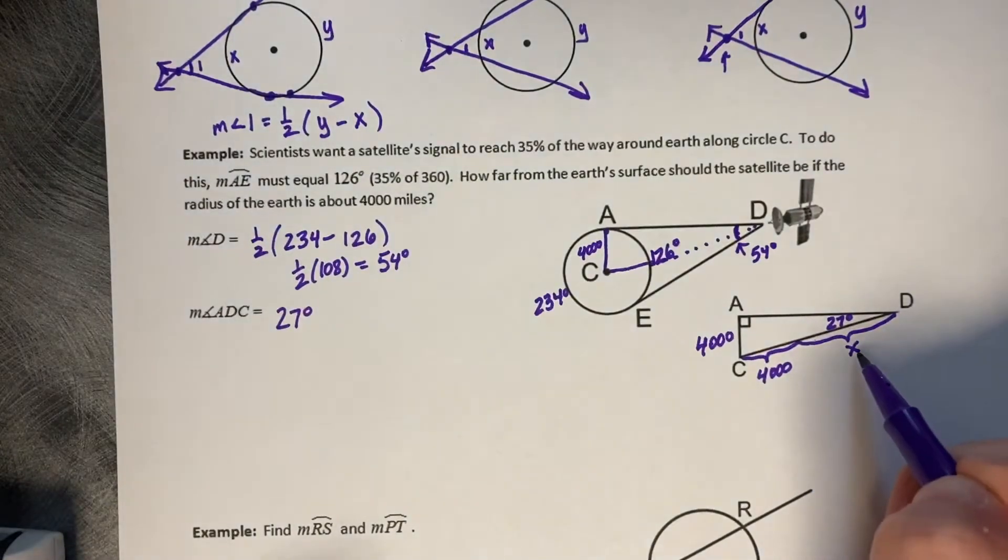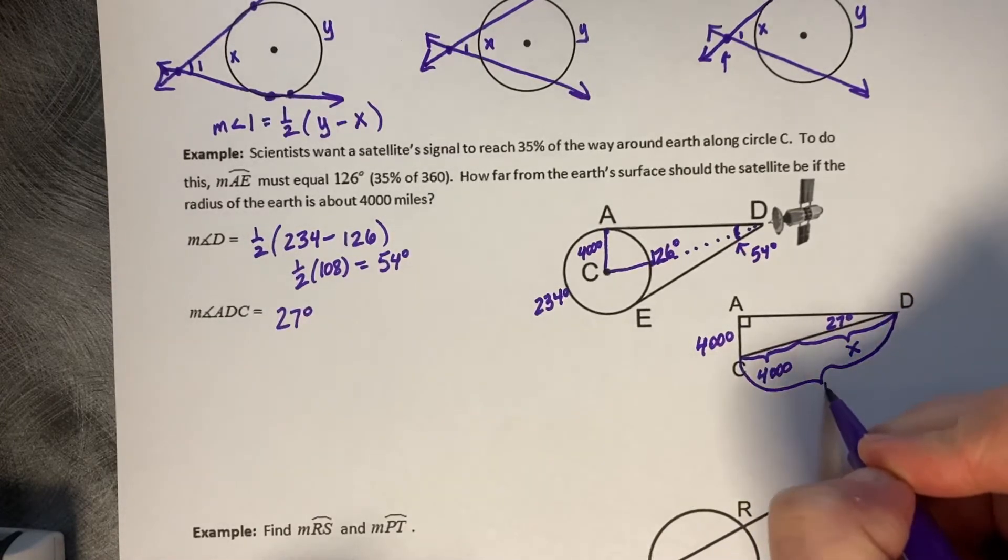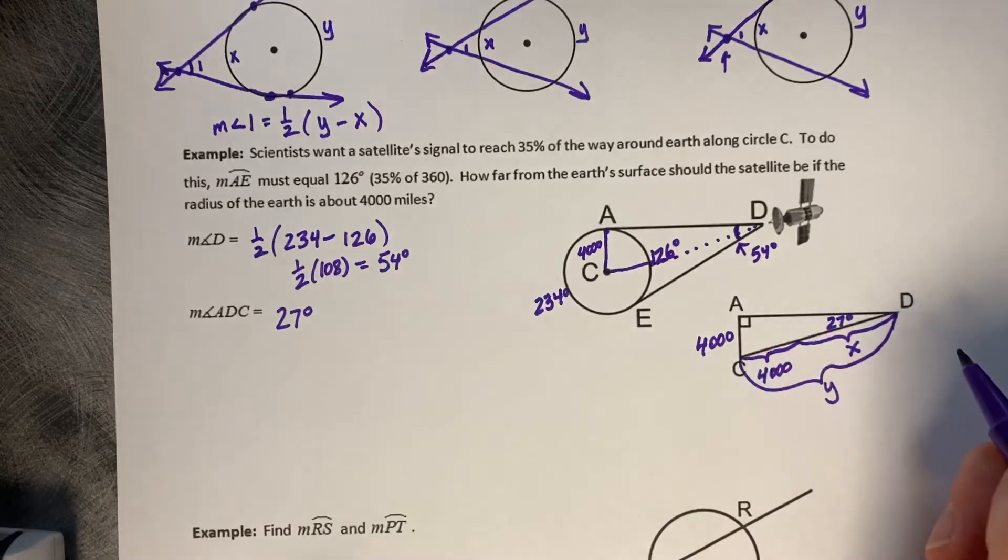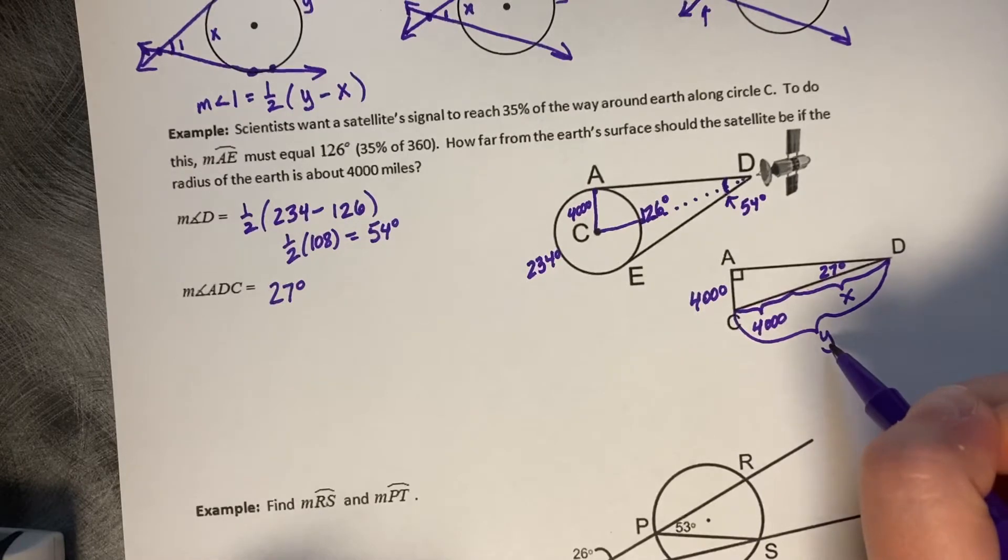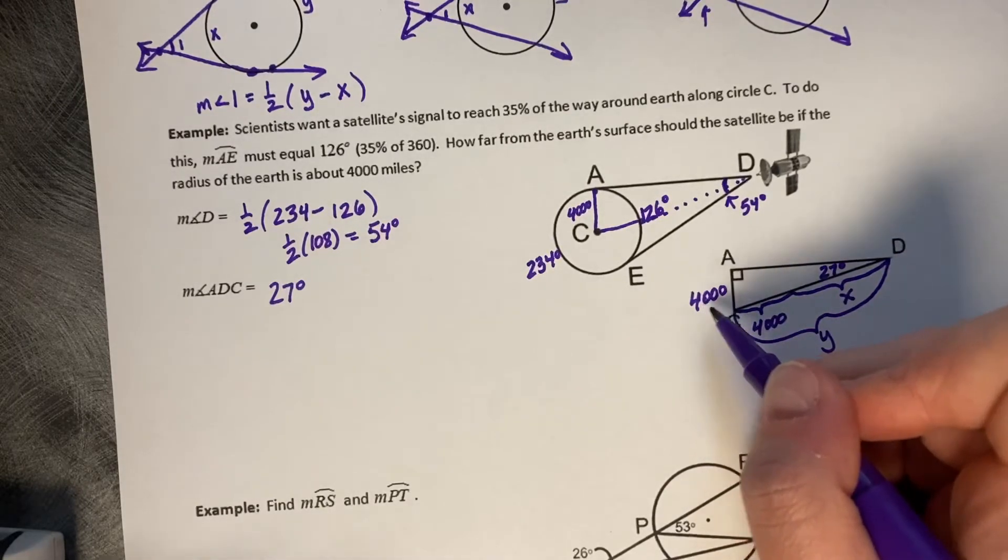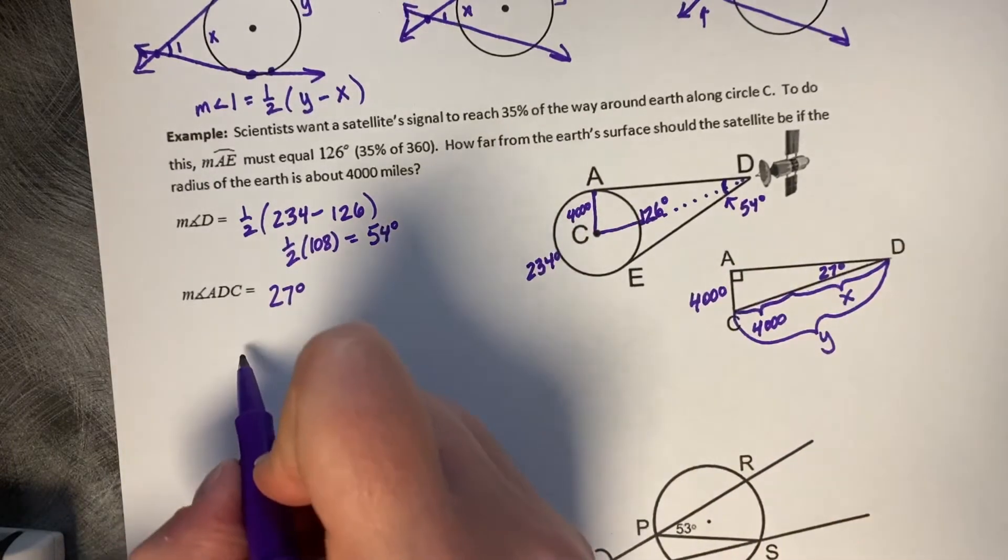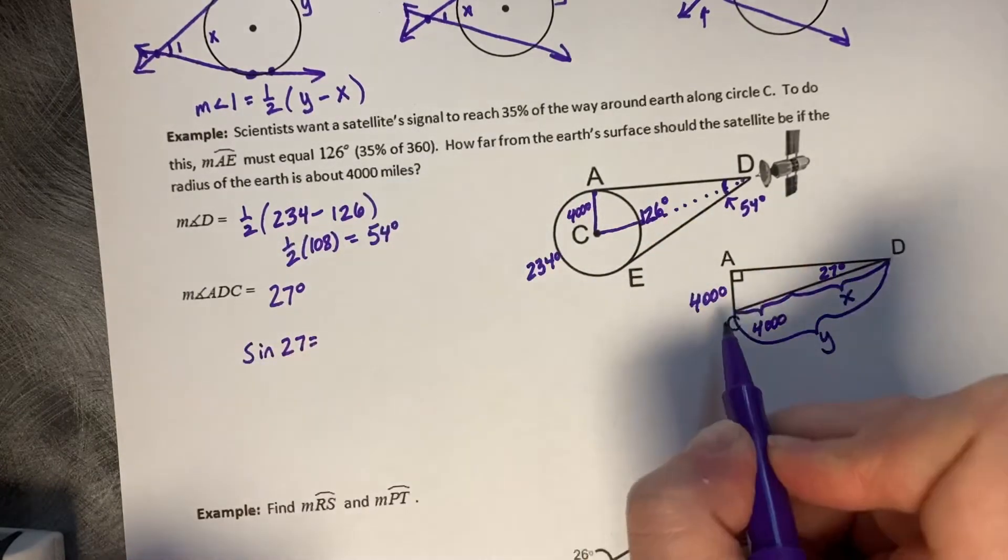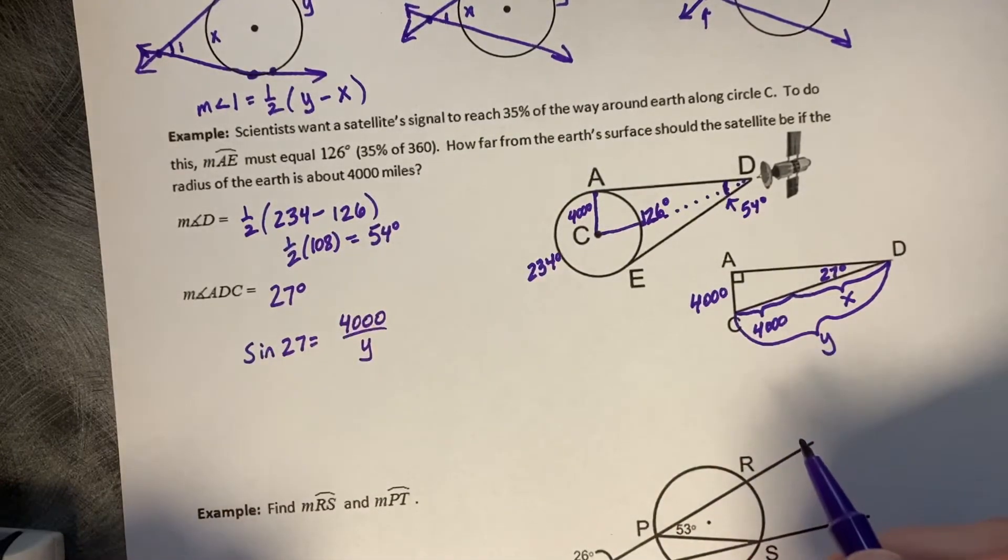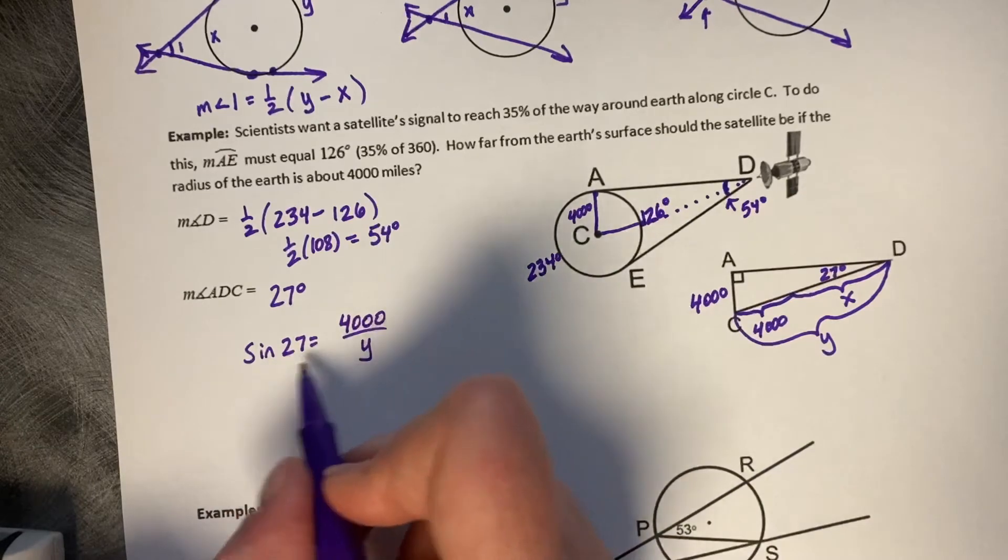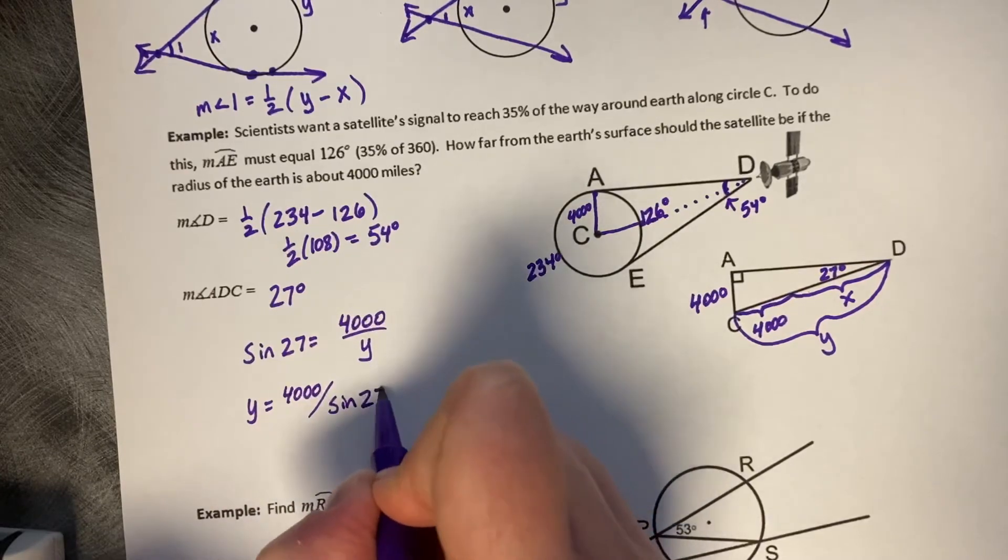And now we need to calculate this missing piece of X. So, what we actually need to do is calculate this entire length of CD, which I'm going to end up calling Y. And we're going to subtract off 4,000, because then we can calculate this missing piece of X. So, focus on it as Y. This is a hypotenuse, and 4,000 is an opposite. So, opposite and hypotenuse is sine. So, we can set up a sine ratio. The sine of 27 equals 4,000 divided by Y. This is going to be a division one. So, Y is equal to 4,000 divided by the sine of 27.